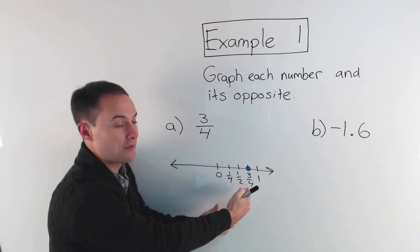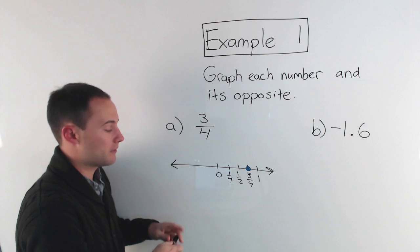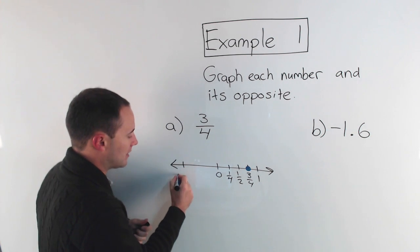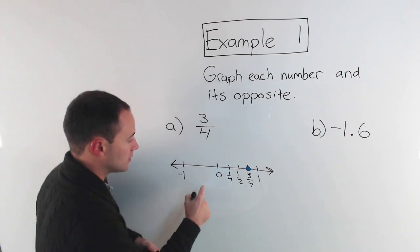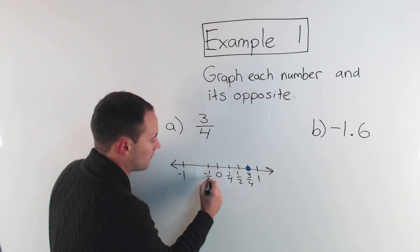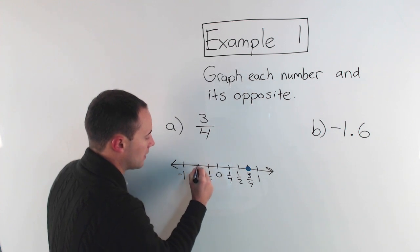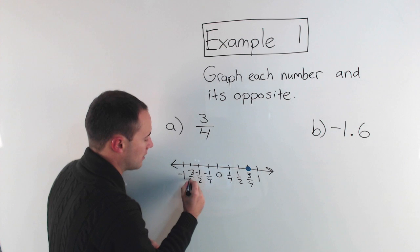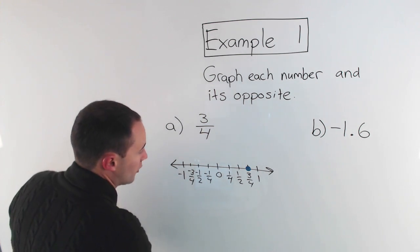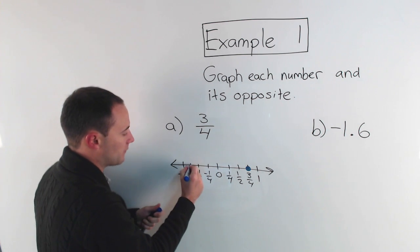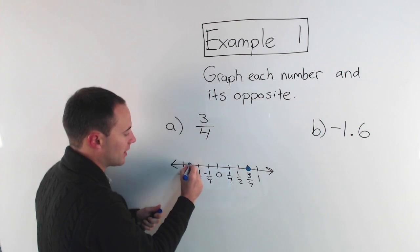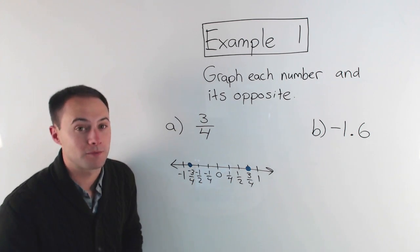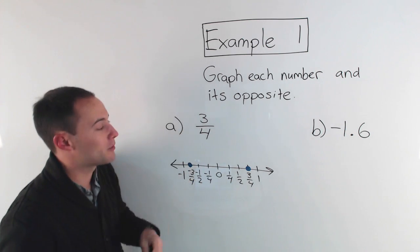The opposite of three-fourths would be negative three-fourths. Same thing — that's going to be in between zero and negative one. So we have negative one-fourth, negative one-half, and negative three-fourths. The opposite of three-fourths is negative three-fourths, and I graph that point right there. So there's the first part of our first example.